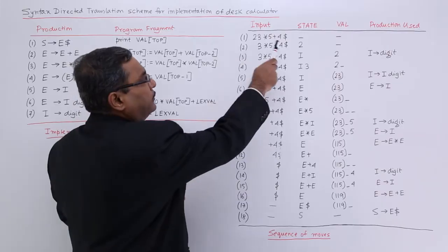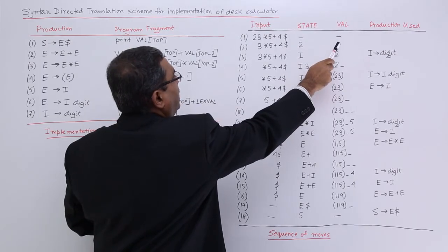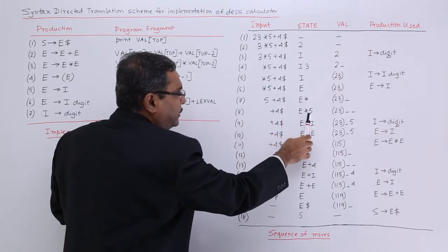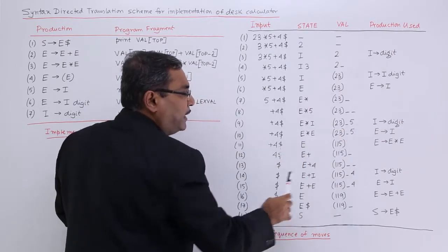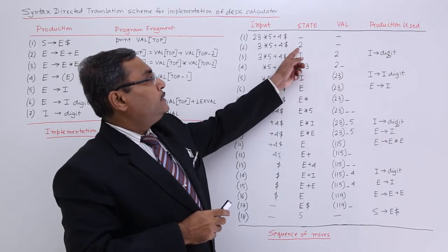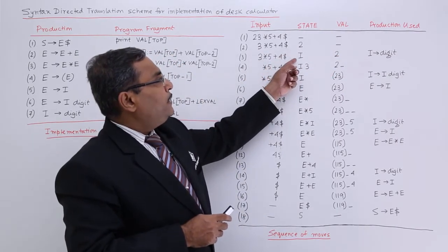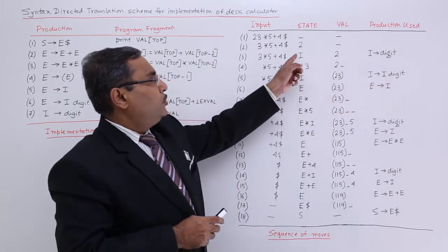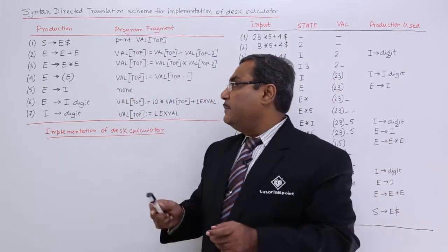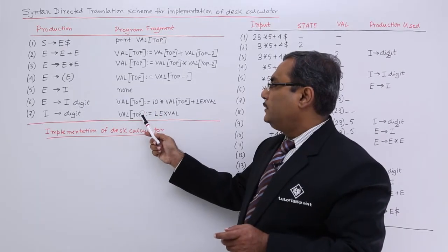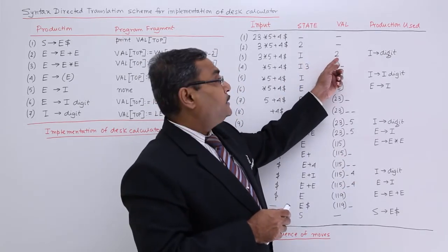First, 2 will be pushed. When we have 3 symbols there will be 3 locations on the top of the stack — 3 symbols, 3 locations. So digit 2 is the current state; I am not pushing anything on the stack yet. Now I shall use the production rule I produces digit, so 2 will be replaced by I. The corresponding semantic action is val[top] is equal to lex val, so on the val[top] I shall be getting this lex val.